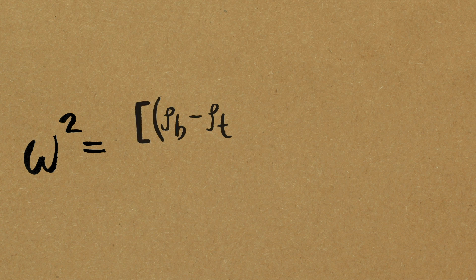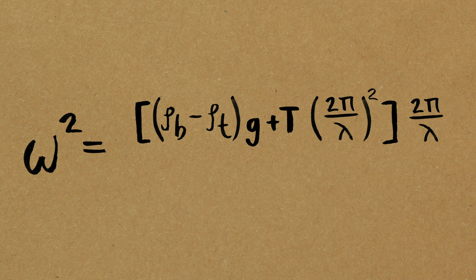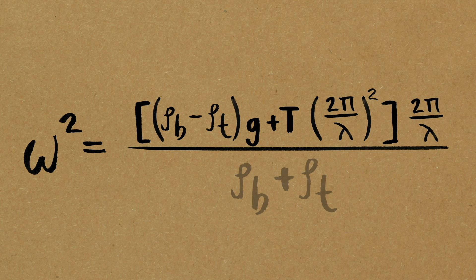The equation that we end up with: ω² equals the density difference between our fluids times gravity, so that's like our gravitational force, plus surface tension multiplied by 2π divided by the wavelength squared, all multiplied by 2π over the wavelength, and then the whole thing divided by the sum of the densities. Now the densities are given by our setup, τ is surface tension, and g is gravitational acceleration. So the other things that we've introduced here are ω and λ.